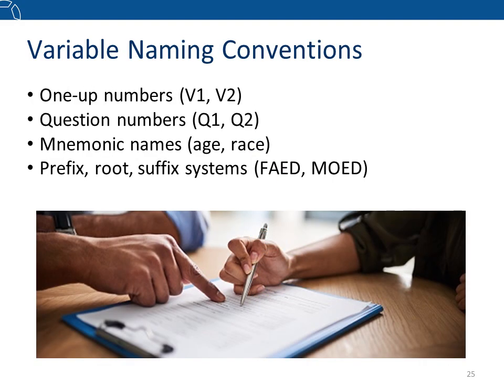At the start of your project, you will want to consider the variable naming convention you will use throughout your data collection — for both statistical and text data. One common convention is one-up numbering, like v1 for the first variable, v2 for the second, and so on. These are simple but do not convey any information about the content of each variable. A similar convention is using question numbers, such as q1 for the first survey question, which is also simple but has the same issue.